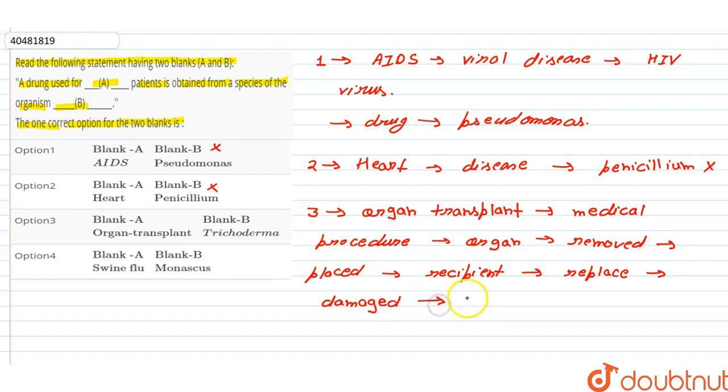The drug for the organ transplant process is obtained from an organism and the name of the organism is trichoderma. We get a drug which is used in the organ transplant. So this is our correct match for this question.